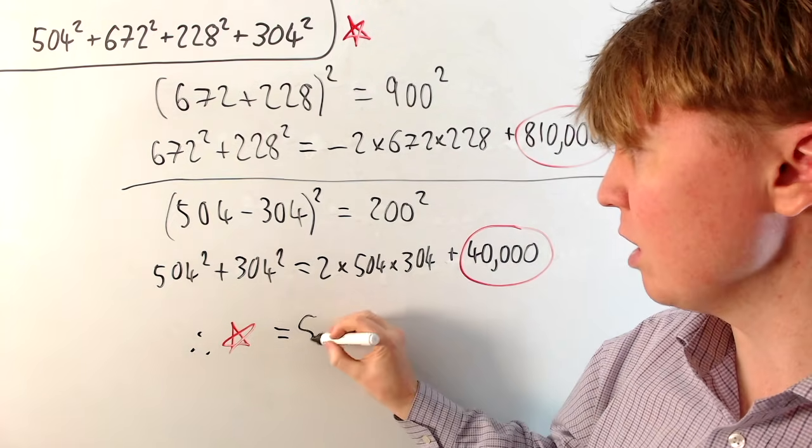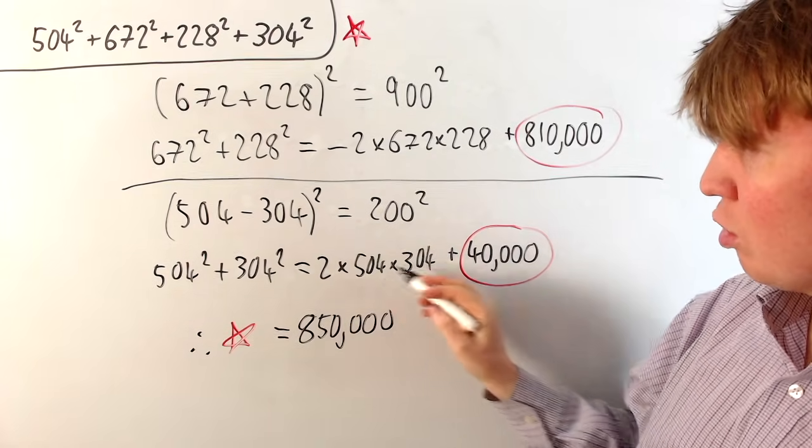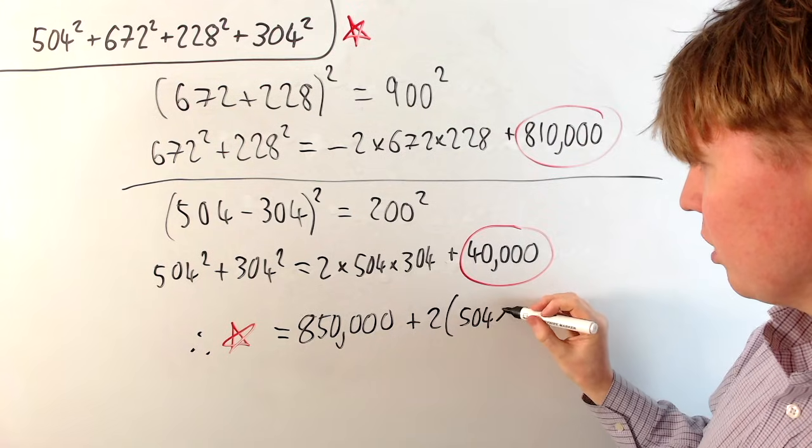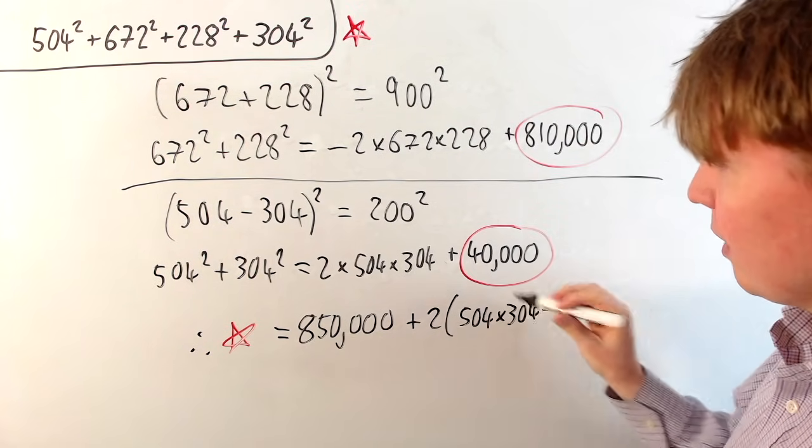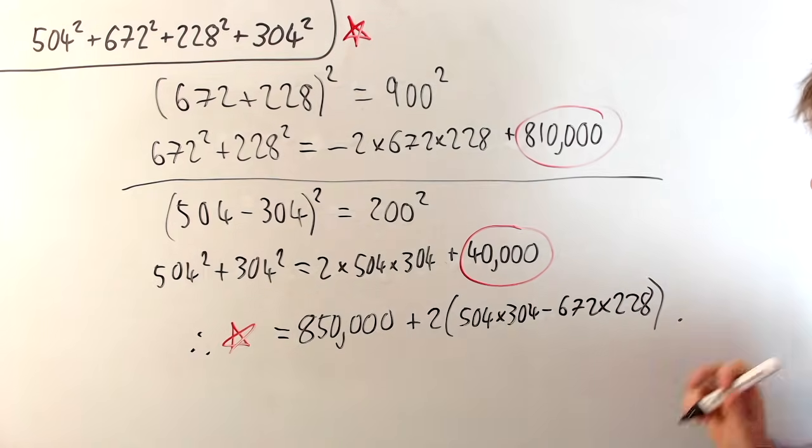And then we've got 2 of lots of this and 2 of lots of this. So we'll put plus 2 times 504 times 304. And then it's minus 672 times 228.